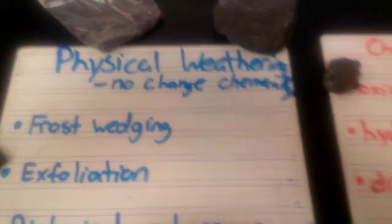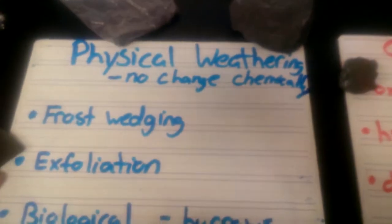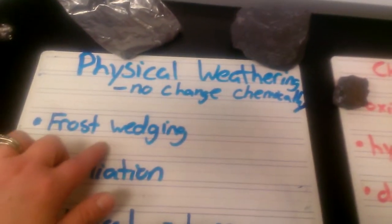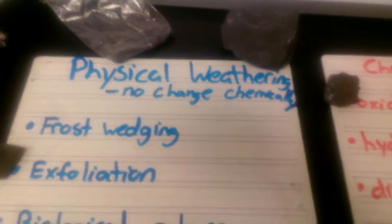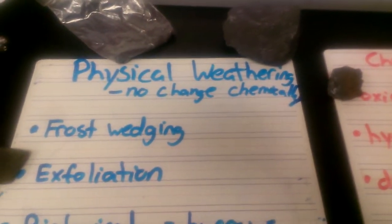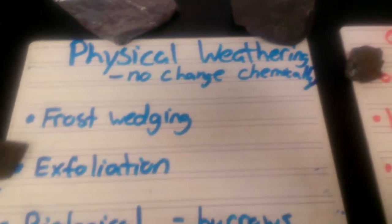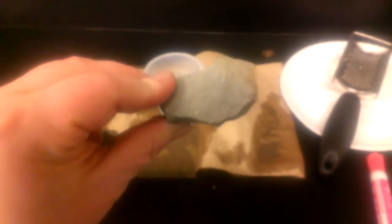So with physical weathering, there's no change chemically to what the rock is doing. My first example of physical weathering is called frost wedging. And the name suggests it has something to do with cold and it's definitely true. So if we take a rock like this one, this is a little bit of siltstone, we can put it in a cup of water. So I'm placing it in my cup of water.